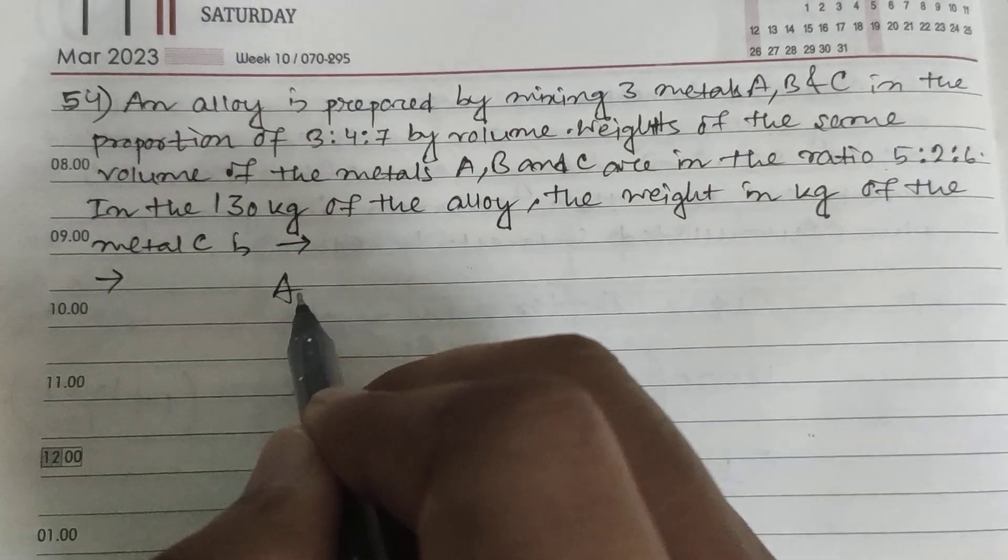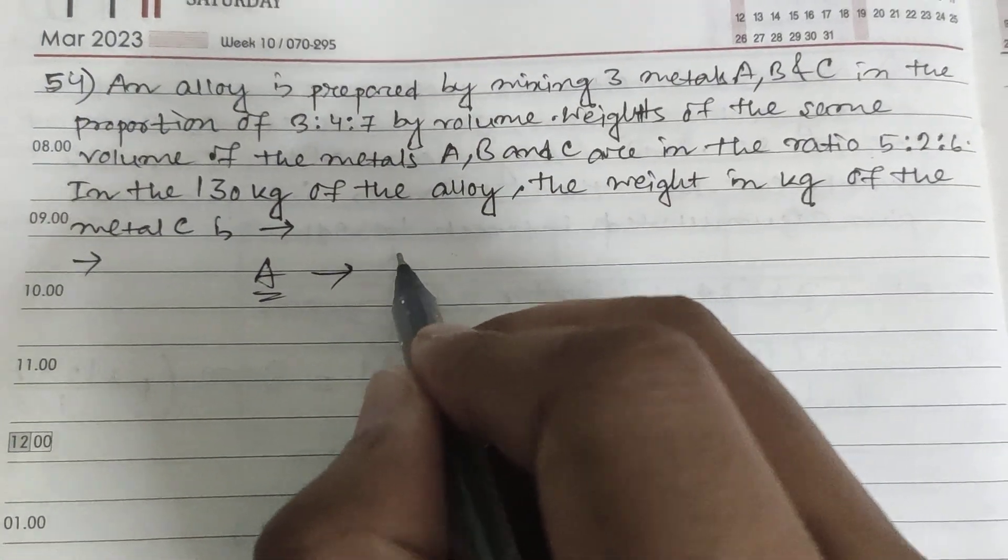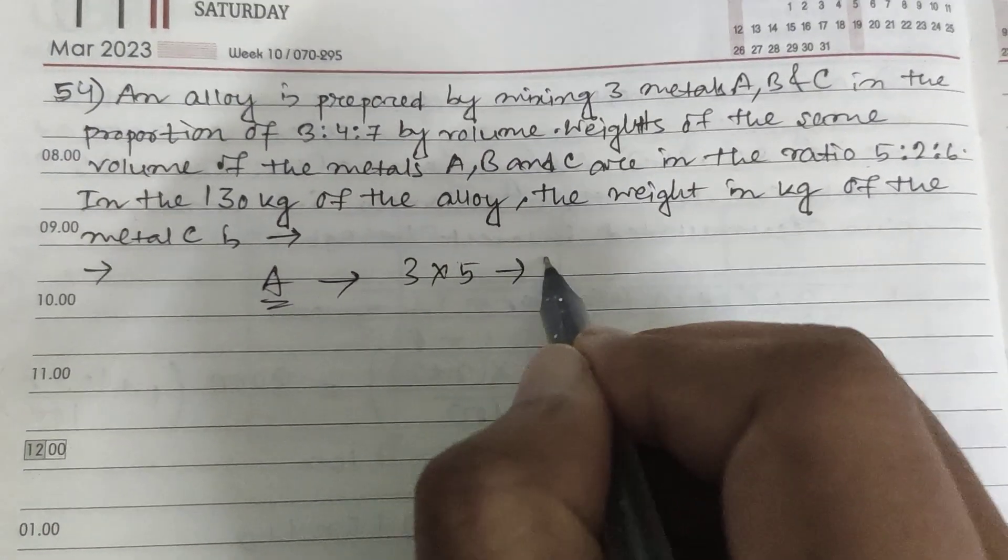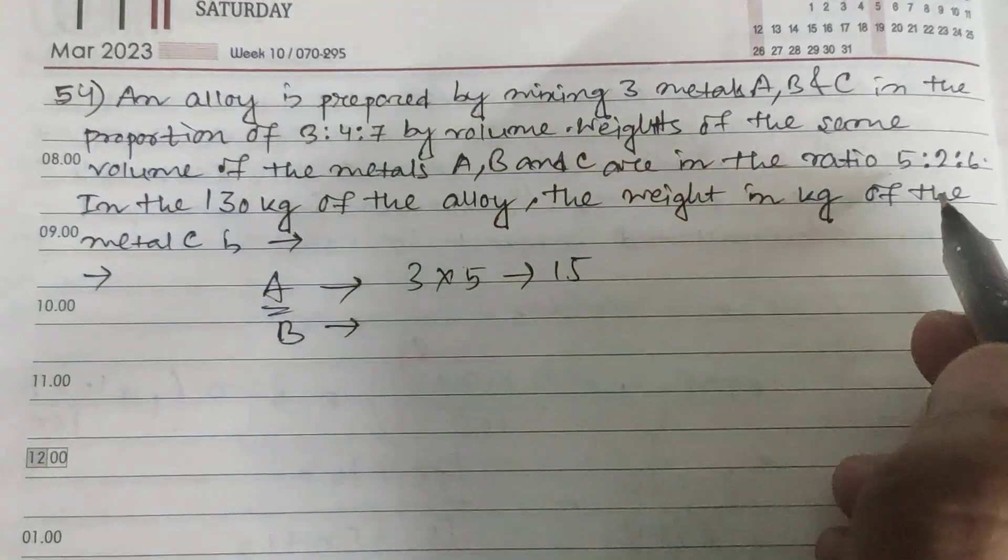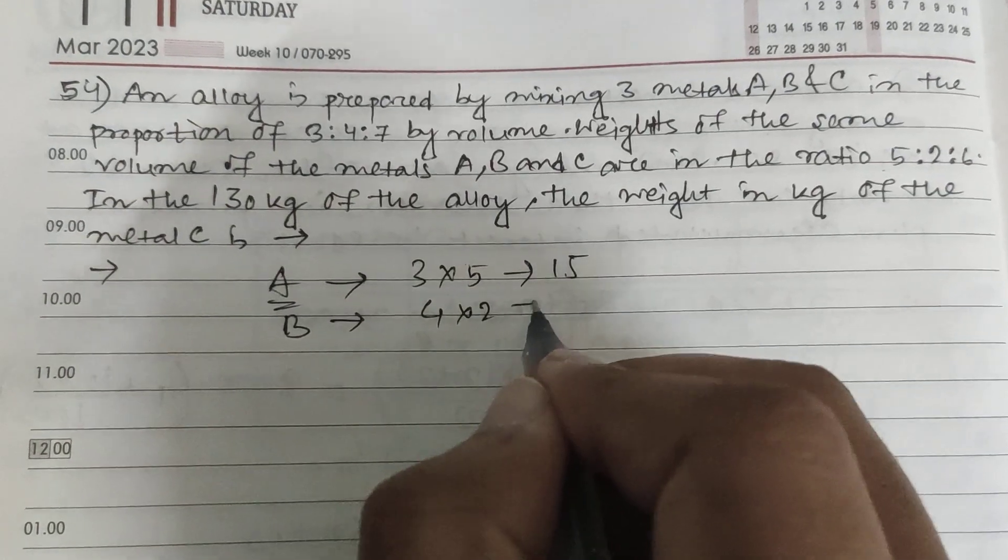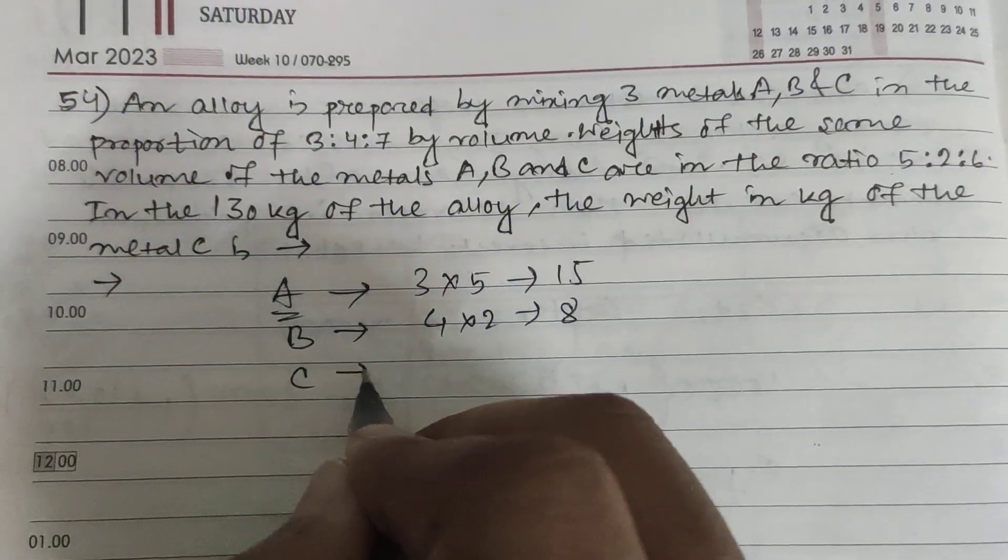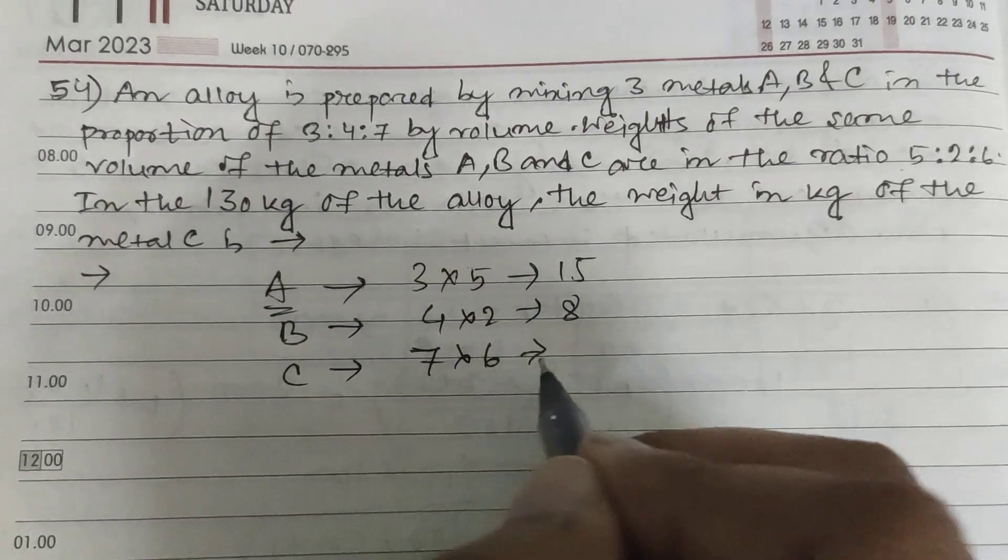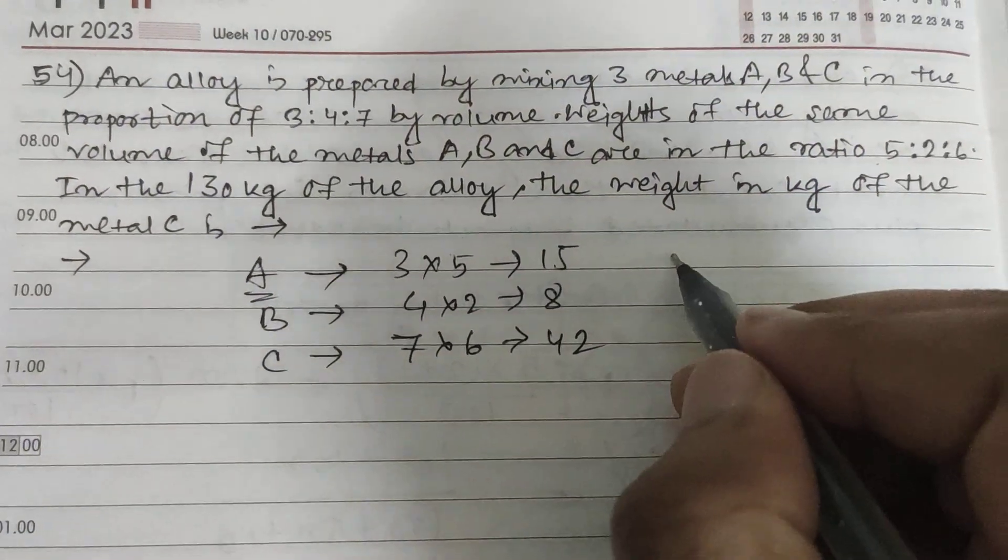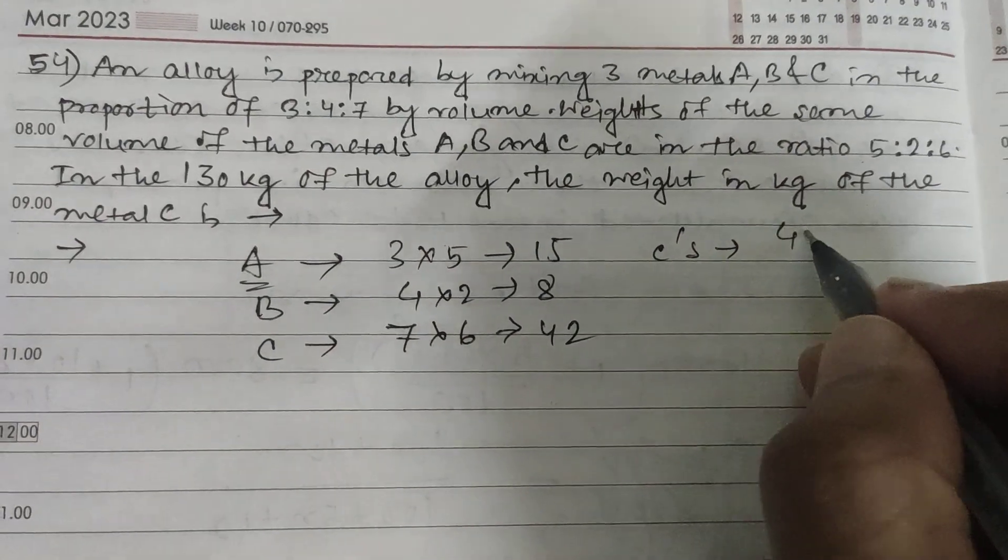For A, total weight is 3×5, suppose 15. For B, this is also 4×2 which is 8. For C, 7×6 = 42. So C's part is 42.